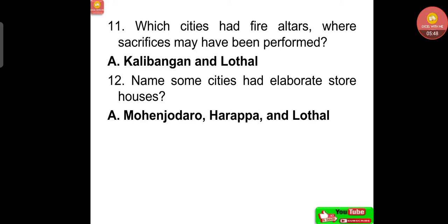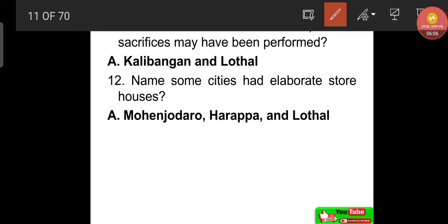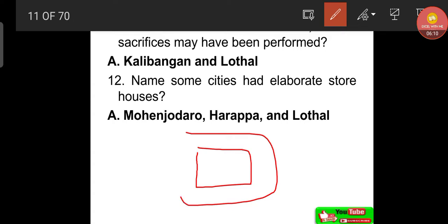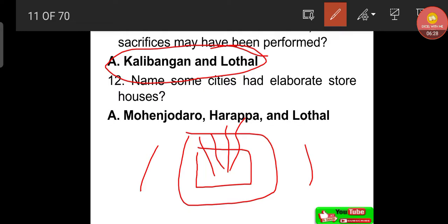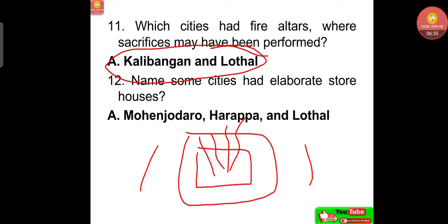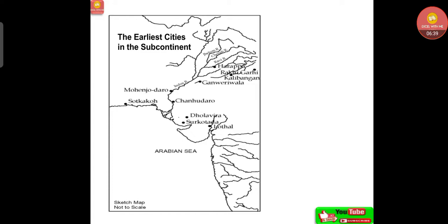Cities that had fire altars, where sacrifices may have been performed, were Kalibangan and Lothal. In those days, yagnas were performed around fire altars. Cities that had elaborate storehouses were Mohenjo Daro, Harappa, and Lothal.